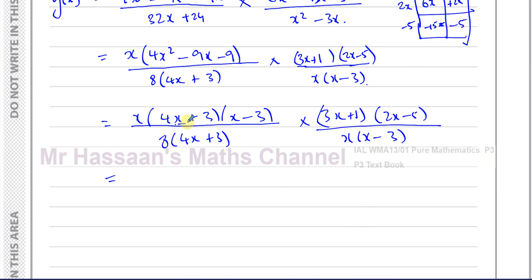So now we can see the common factors. 4x + 3 cancels out with this 4x + 3. When you're multiplying two fractions, anything in any numerator and denominator can cancel out. So these two can cancel out. The x cancels out with the x. And you're left with the 8 underneath here. So you end up with, if you expand that, that's going to be 6x² - 15x + 2x - 5 over 8.